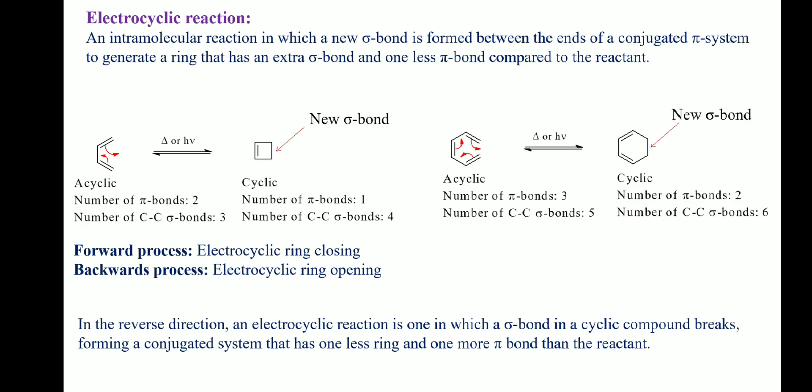An electrocyclic reaction is defined as an intramolecular reaction in which a new sigma bond is formed between the ends of a conjugated pi system to generate a ring that has an extra sigma bond and one less pi bond compared to the reactant. Electrocyclic reactions are reversible. In the reverse direction, an electrocyclic reaction is one in which a sigma bond in a cyclic compound breaks forming a conjugated system that has one less ring and one more pi bond than the reactant. Electrocyclic reactions can occur under thermal or photochemical conditions.